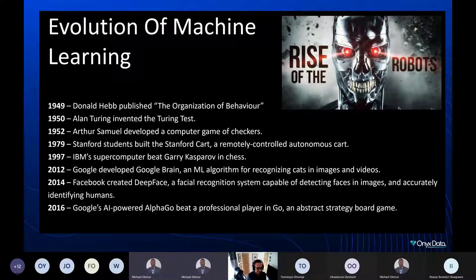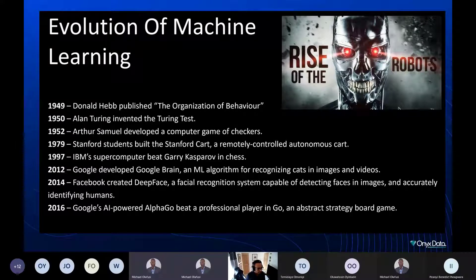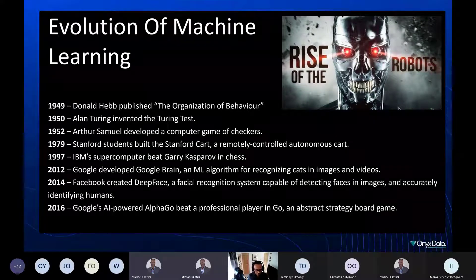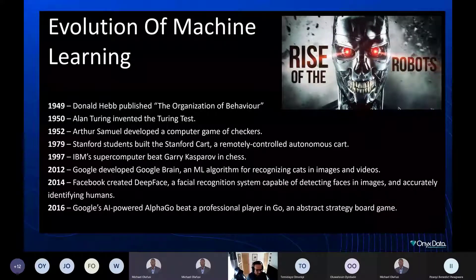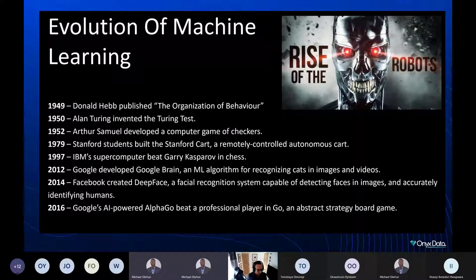Looking at key events over the last 60–70 years of machine learning: Donald Hebb published 'The Organization of Behavior' — if you're not familiar with it, I suggest you take a look. In 1950, Alan Turing invented the Turing test. Arthur Samuel developed his checker-playing computer program. And in 1979, Stanford students built the Stanford Cart, a remotely controlled autonomous cart — so the concept behind autonomous vehicles like Tesla, Nvidia, and Google actually dates back to 1979.